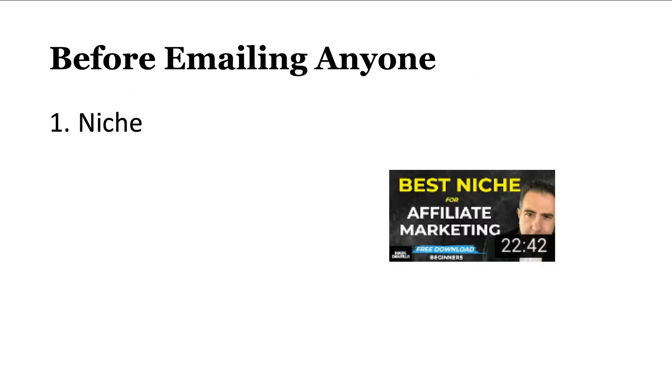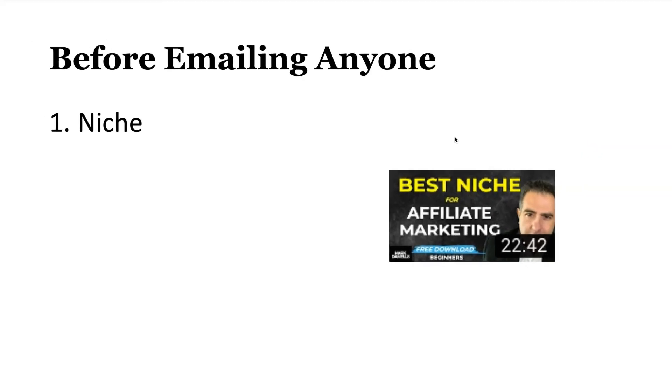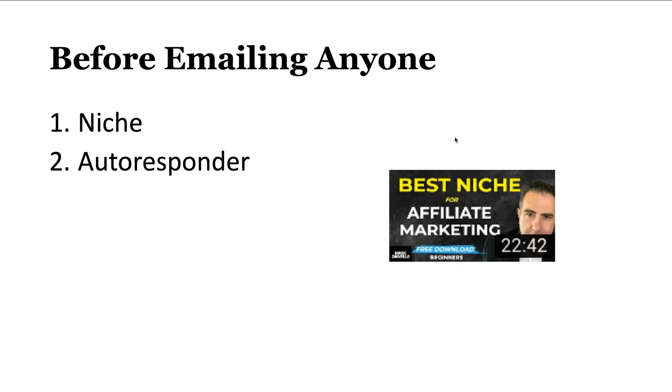Before you do any email marketing or email anyone, a few things have to be in place. First, you have to know your niche — and I'm talking about someone like a beginner trying to get started. You need to know your niche very well before you write a single word in your email. I do have a video on this with a free download of 27 free niches you can pick from. Second, autoresponders are not all the same — you have to get one that is good for affiliate marketing.